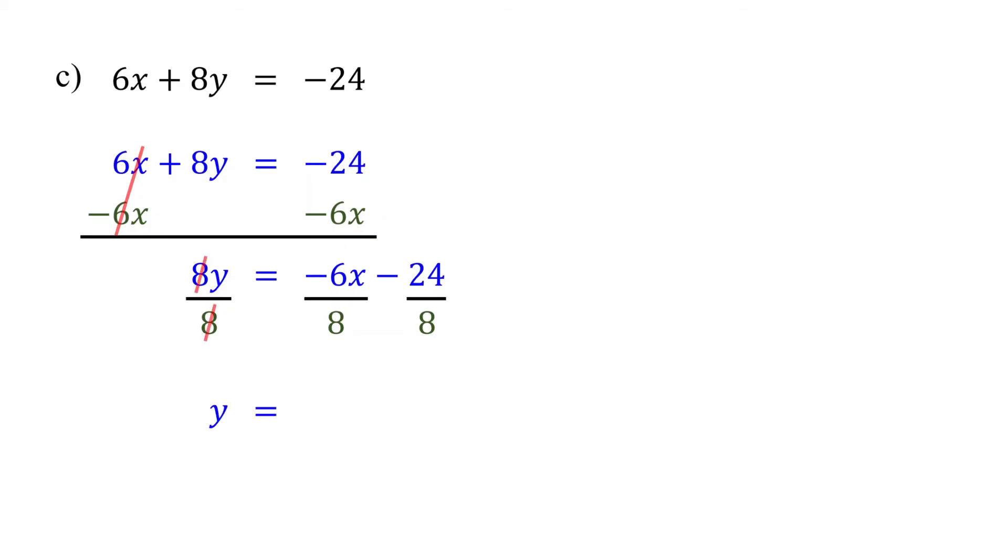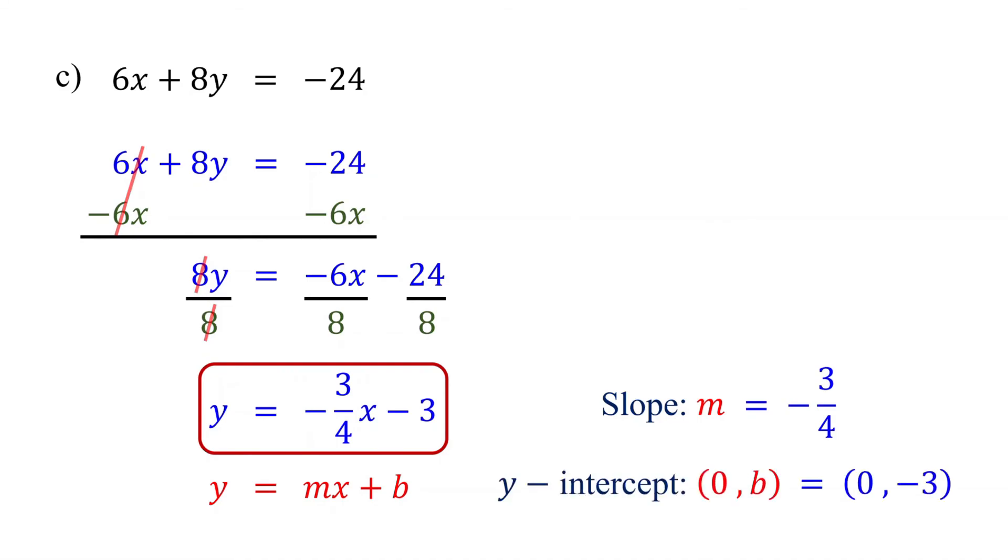These cancel out. If we divide both negative 6 and 8 by 2, it reduces to negative 3 over 4. Remember to always simplify fractions as you go. Negative 24 divided by 8 is negative 3. Now, the equation is in slope-intercept form. The slope is negative 3 over 4, and the y-intercept is 0, negative 3.